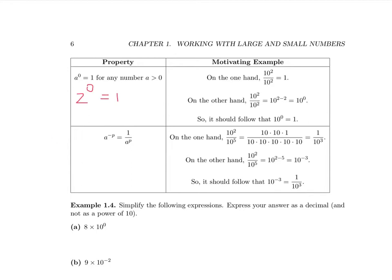The next property says that if you have a number raised to a negative power, this is defined to be 1 over the same number raised to a positive power. For example, 2 raised to the negative 3 is defined to be 1 over 2 cubed. If I wrote 5 to the negative 2, this is defined to be 1 over 5 squared. This property is not necessarily intuitive at all, so let's look at an example. Suppose we took 10 squared and divided it by 10 to the 5th.